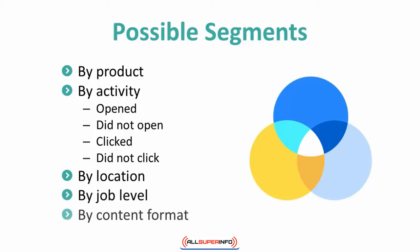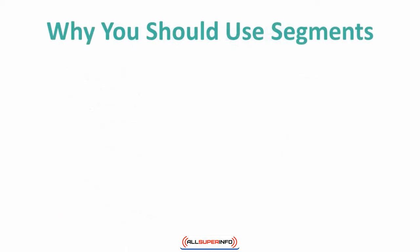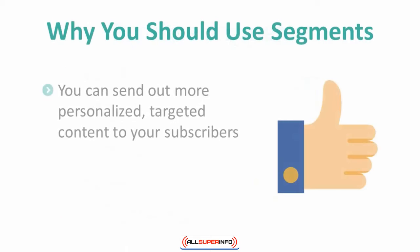Fifth, content format. Remember the options technique — the technique in which you provide content in different formats that are appealing to different subscribers. You can even segment your lists according to how they consume content. For instance, some people may prefer e-books while others may like blog posts. The advantage of segmenting your lists is that you are able to send out more personalized, targeted content to those subscribers.